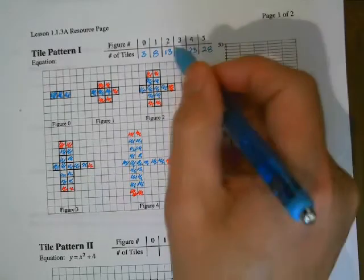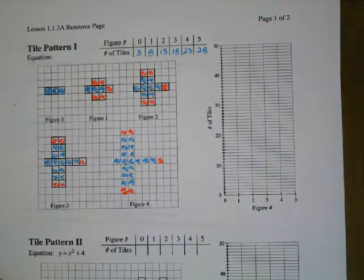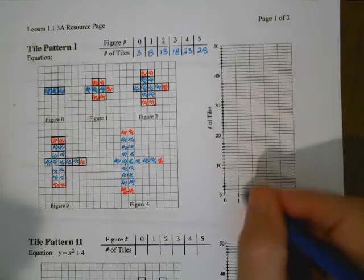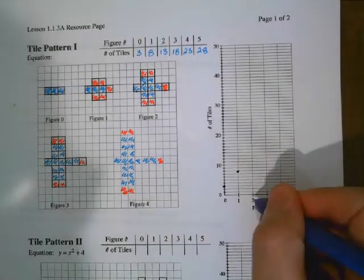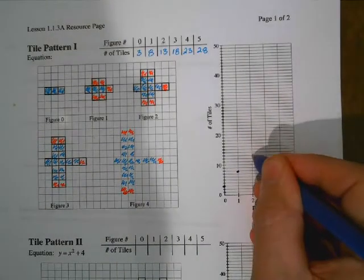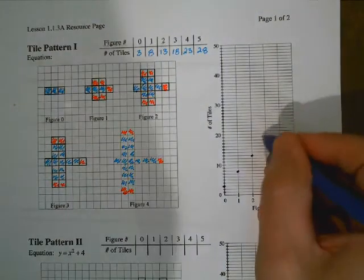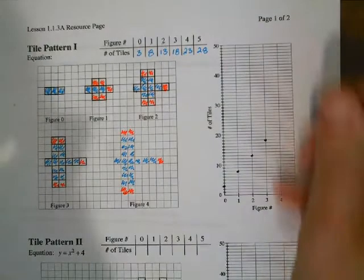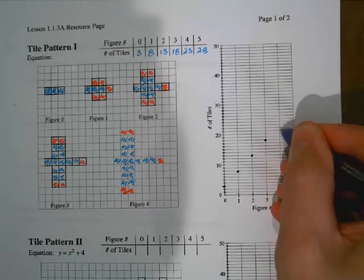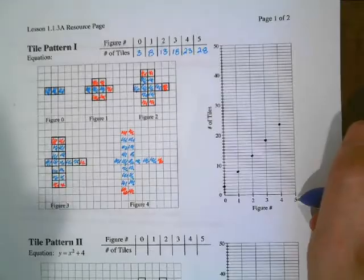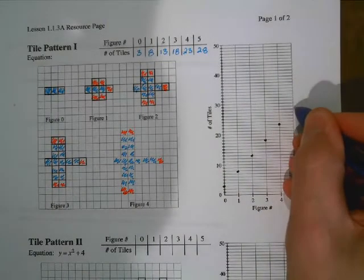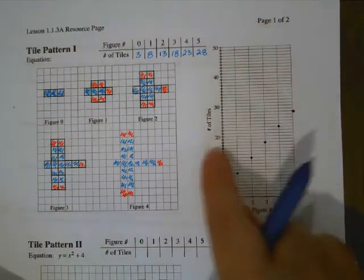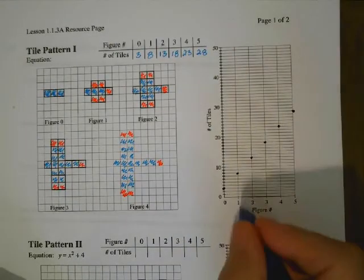Now let's do table to graph — let's go ahead and graph this thing. At figure zero we had 3, so there's our first point. At 1 we've got 8. At 2 we had 13. At 3 we had 18. Number 4 is 23. And then 5 goes up to 28. Notice that I didn't make a line in between them. What I've done here is made something called a discrete graph. Discrete means that the graph's points have not been connected. Sometimes on a graph we want to make it discrete because we want to show that there really isn't a figure 1.5 — they didn't give us a pattern figure 1.5.